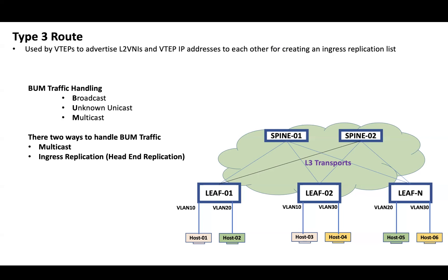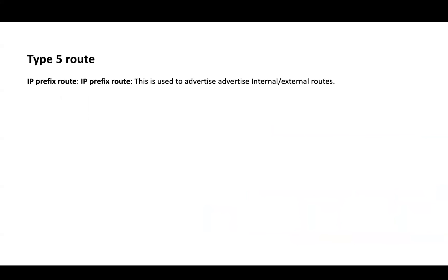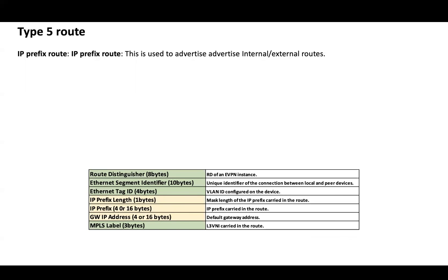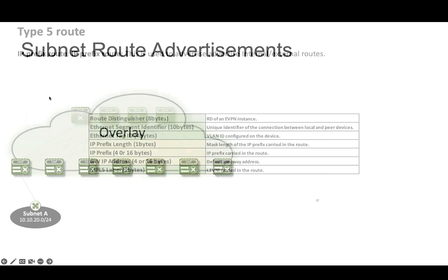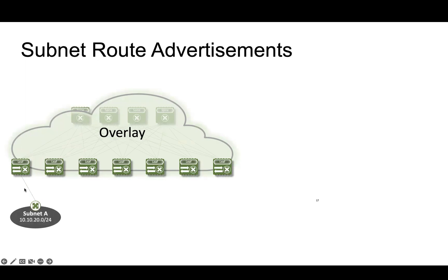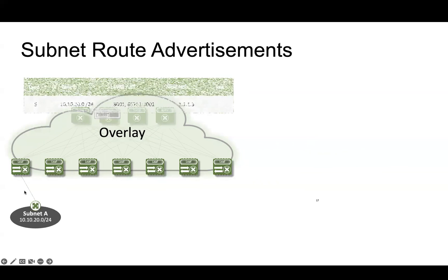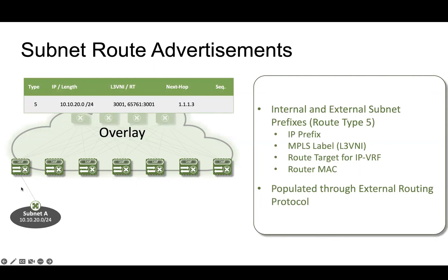Now let's discuss route type 5. Route type 5 is used to advertise IP prefixes for inter-subnet connectivity. Here is the table describing the different fields in the type 5 route. What we do here is bring directly connected routes, statically configured routes, or dynamically learned routes into the BGP control plane via redistribution. These routes will appear as type 5 routes in the E-VPN table — for example, redistributing 10.10.20.0 into the BGP control plane.